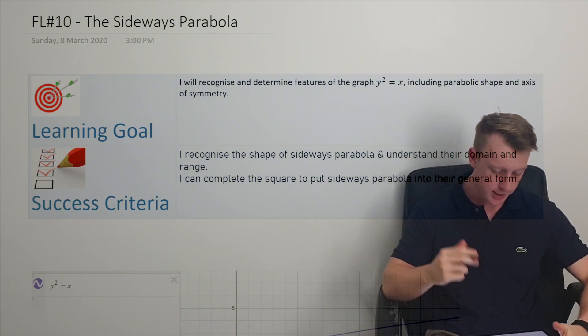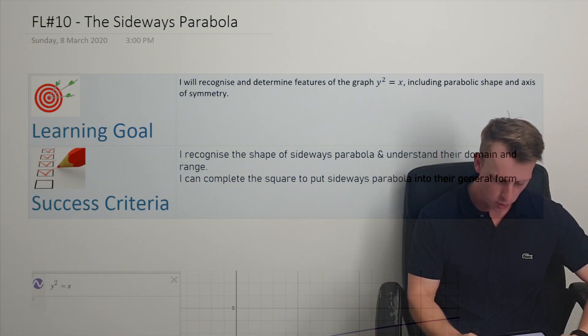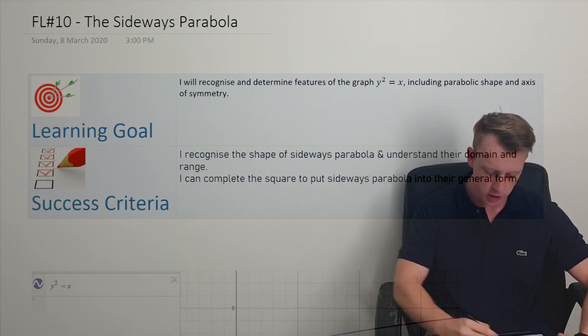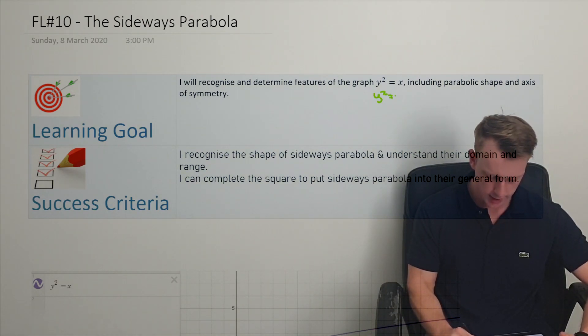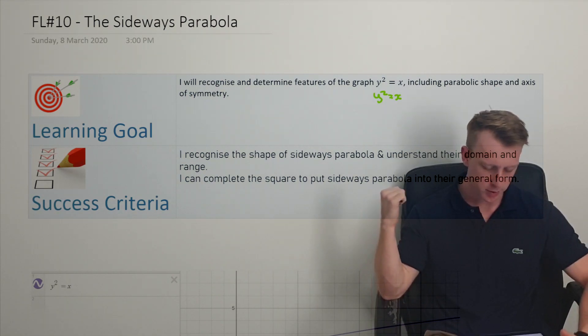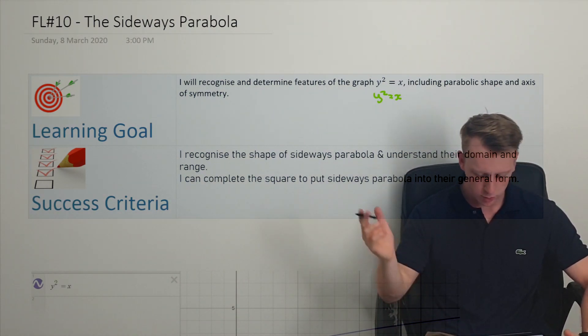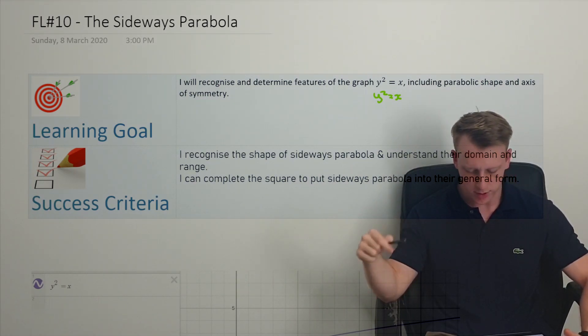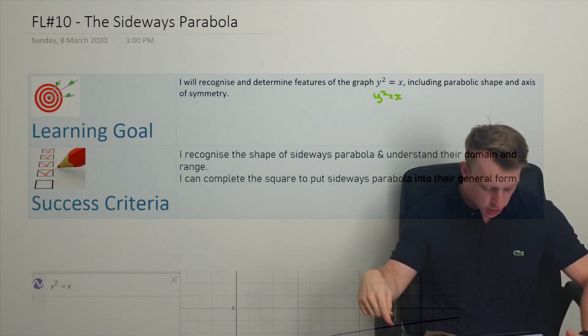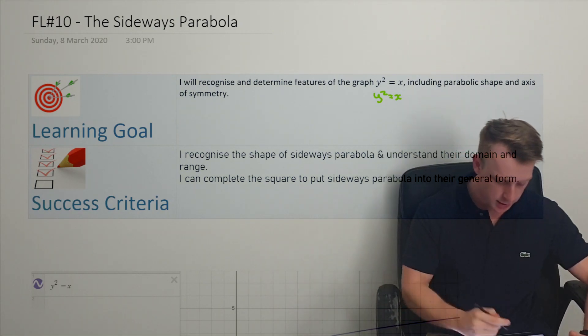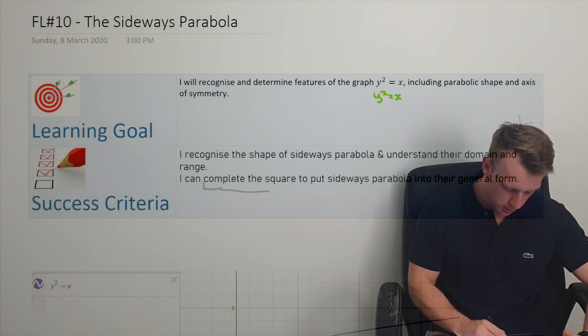Another relation that we're going to look at is the sideways parabola. So learning goal, we're going to recognize and determine the features of y squared equals x, including the parabolic shape and the axis of symmetry.